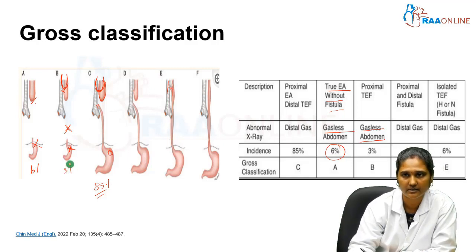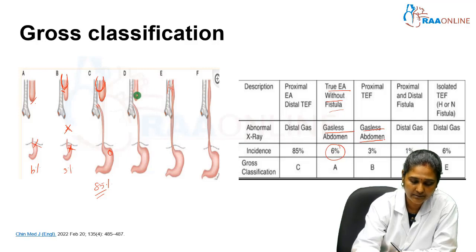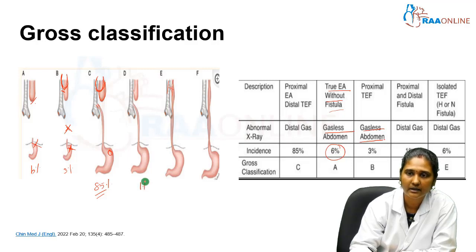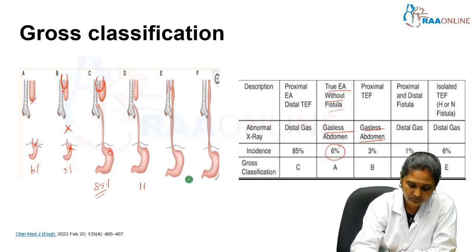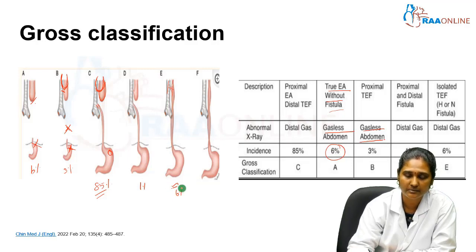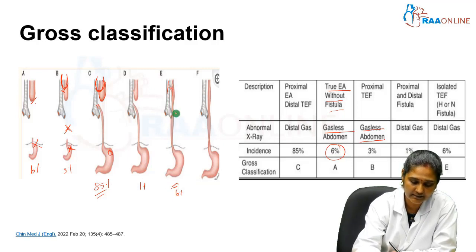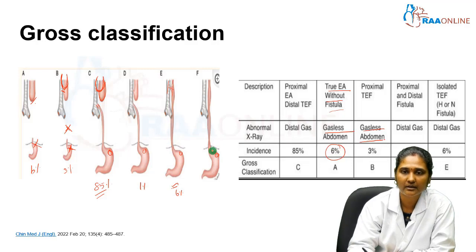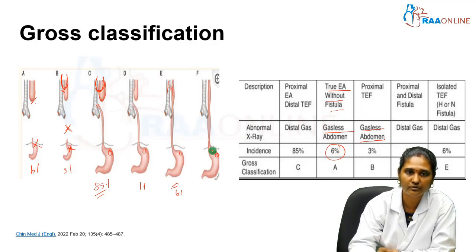The proximal tracheoesophageal fistula (Type B) has an incidence of approximately 3%. Type D is very rare, accounting for only about 1%. The H-type fistula (Type E) has an incidence of approximately 6%. In Types D and E there is a distal connection, so gas will be present in both these conditions. By this classification, tracheoesophageal fistula is divided into five types.